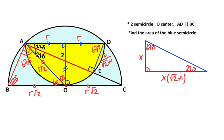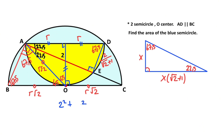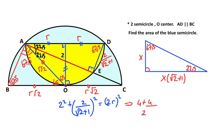After that, focusing on triangle ADE, we apply the Pythagorean theorem to get the value of r. So: 2 squared plus (2 over (√2 + 1)) squared equals (r√2) squared. Therefore: 4 plus 4 over (2 + 2√2 + 1) equals r squared times... simplifying gives us 4 plus 4 over (3 + 2√2) equal to r squared.